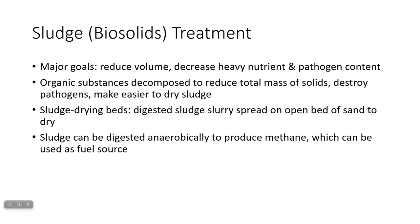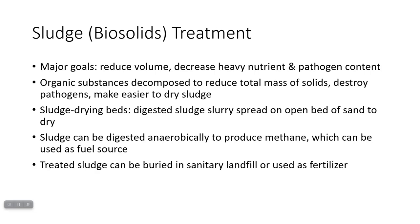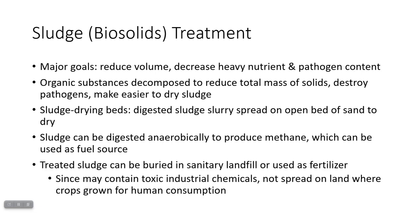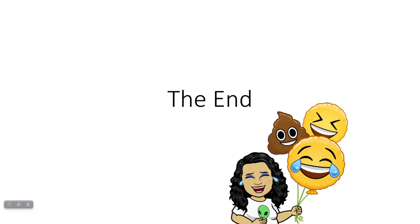Some treatment plants will actually produce this methane and use it to power the plant so that they're pretty energy neutral. You can also take that treated sludge and bury it in a landfill or use it as fertilizer. However, if it potentially contains toxic chemicals, then it's not going to be used on land where crops are grown for humans to eat. And that is everything you never wanted to know about what happens when you flush the toilet or wash stuff down the sink.